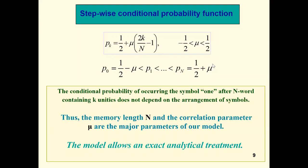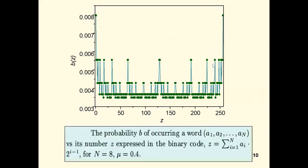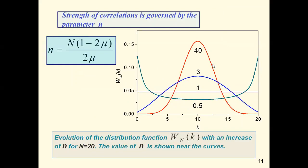This model allows an exact analytical treatment which I will briefly describe now. On this slide we see very nice fractal distribution of words containing different numbers of zeros and unities. To demonstrate this, we show the probability of all words of length eight. For a random uncorrelated sequence, the probability of all words of the same length would be equal. Here the probabilities are different. Using the previous result, we can calculate the distribution function of words by the number k of units in it and draw this dependence as a function of k.